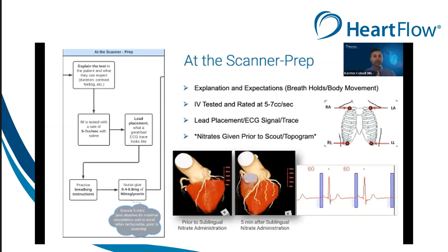Once the patient has achieved optimal heart rate and all patient prep has been completed, continue explaining the expectations of the test. Explain and practice breathing instructions, the duration of the scan, the warming sensation of contrast media, and refraining from body movements. We highly recommend that nitrates be given prior to starting the initial scout topogram to allow time for proper vasodilation and avoidance of reflex tachycardia, which typically happens around the three-minute mark. Starting the scan any earlier than five minutes is considered suboptimal. Proper IV testing with a hand flush and power injection is recommended, along with good ECG lead adhesion and appropriate placement to maximize signal and ensure a clean ECG trace.